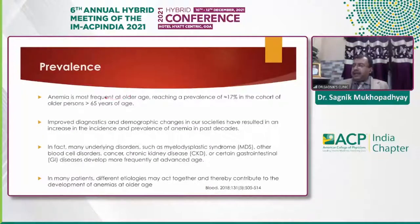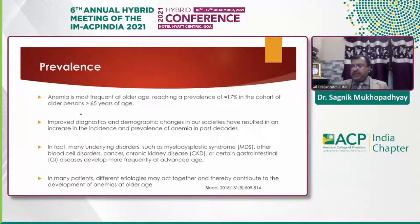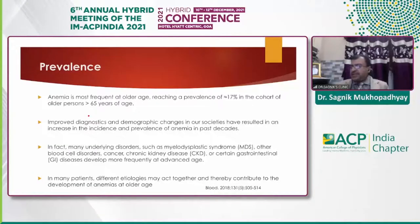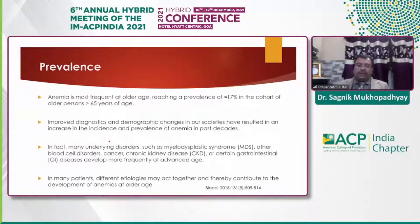The prevalence of anemia is increasing in old age, reaching about 17 percent in the cohort of older patients more than 65 years of age. Improved diagnostic and demographic changes in our societies have resulted in an increase in incidence and prevalence of anemia in past decades. We are having more and more geriatric populations, so this type of anemia is regularly increasing. Many underlying disorders such as myelodysplastic syndrome, blood dyscrasias, CKD, cancers, and certain gastrointestinal diseases develop more frequently at old age, and multi-morbidity is a presenting feature in more than 70 to 80 percent of patients.